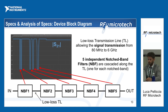You can see the scheme of the transmission line at the bottom part of the slide. To this transmission line we cascade five independent notch band filters, one for each notch band.